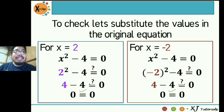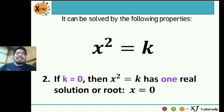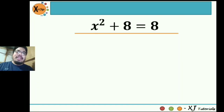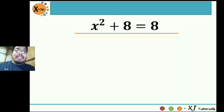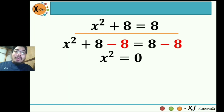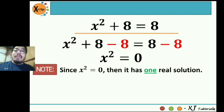How about if your k is equal to 0? Our second property states: if k is equal to 0, then x squared is equal to k has one real solution or root, and that is x is equal to 0. Example: x squared plus 8 is equal to 8. We isolate the quadratic term x squared by subtracting 8 on both sides: x squared plus 8 minus 8 is equal to 8 minus 8. So x squared is equal to 0. The value of our k is 0, meaning if your k is equal to 0, then there is only one real solution.